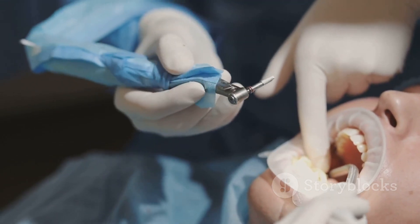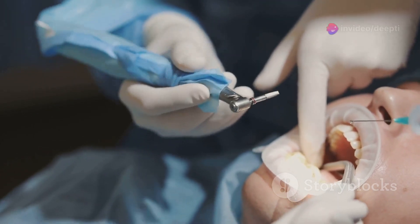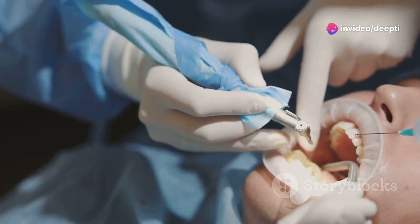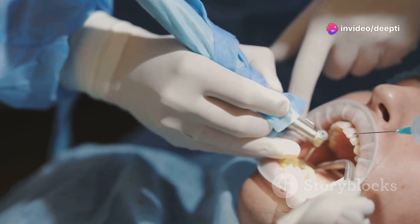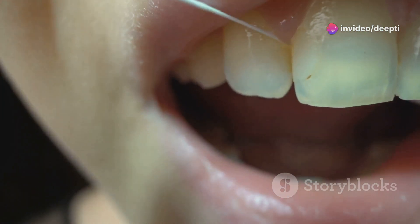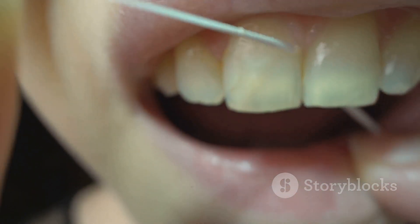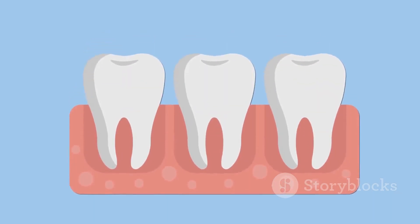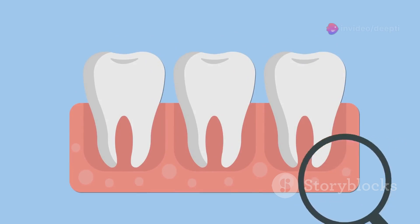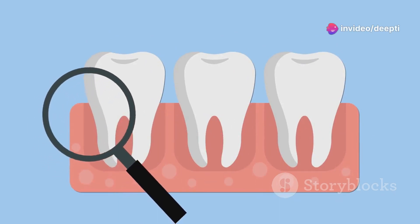Lastly, a gingival abscess affects the gum tissue itself. It usually develops due to injury or irritation in the gums. Food particles lodged between the gums and teeth can also lead to this type of abscess. It's important to remember that while these abscesses have different origins, they all share a common cause — bacterial infection.